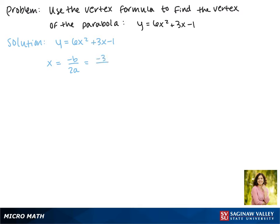Here b is 3 and a is 6. This gives us negative 3 over 12. The top and bottom can both be reduced by 3, making the x value negative 1 fourth.